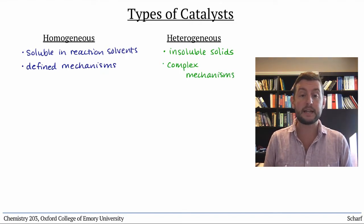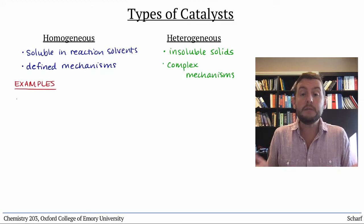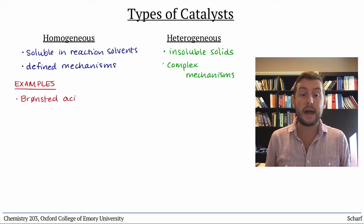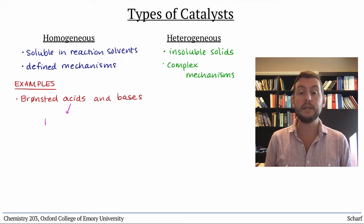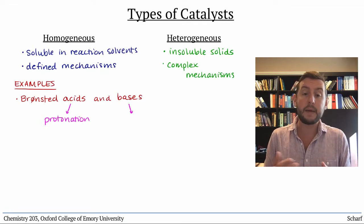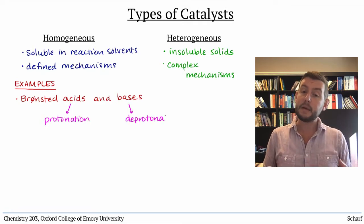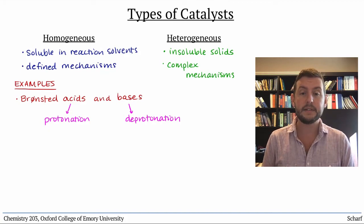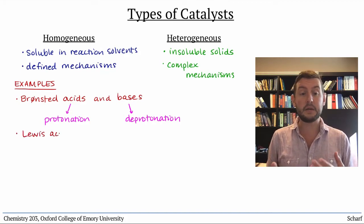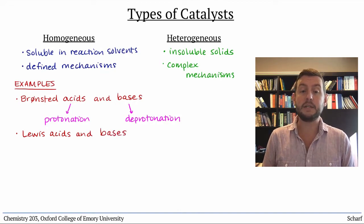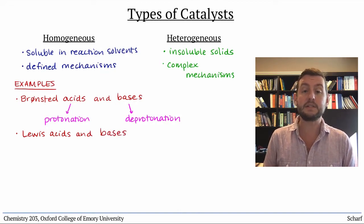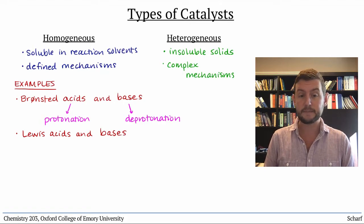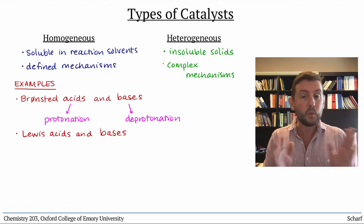Within homogeneous catalysts, there are several varieties. We've seen many examples of Brønsted acid and base catalysts. Acid catalysts work by protonating something — typically the electrophile — thereby making it more reactive. Base catalysts work by deprotonating something — usually the nucleophile — again making it more reactive. Lewis acids and bases can work similarly, and you've probably seen several examples of Lewis acids catalyzing reactions in the textbook, though we won't be focusing on them.